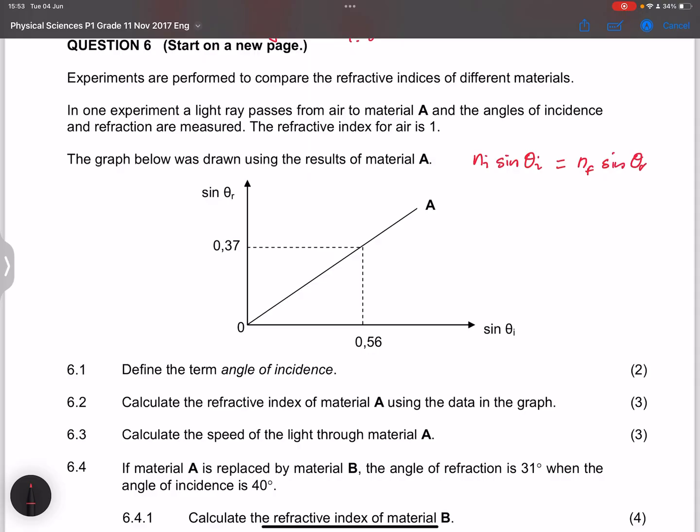So in this case, we know that our refractive index for air, they said to us, that's one. And the refractive index in this case. So that is one. And so sine of theta I, that's 0.56. And we want to find out what is the refractive index for the material. And sine of theta R is 0.37.